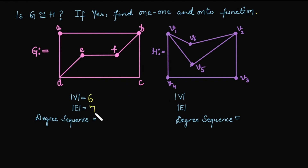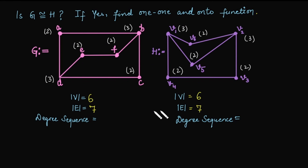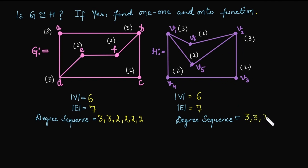Graph G has six vertices and seven edges, whereas graph H also has six vertices and seven edges. For the degree sequence, we first calculate the degree of each vertex and write them in non-increasing order. The highest degree vertex is three, then again three, and the rest of the vertices have degree two. Graph H also has two vertices of degree three and four vertices of degree two. Since the number of vertices, edges, and degree sequence are all the same, graph G may be isomorphic to H.